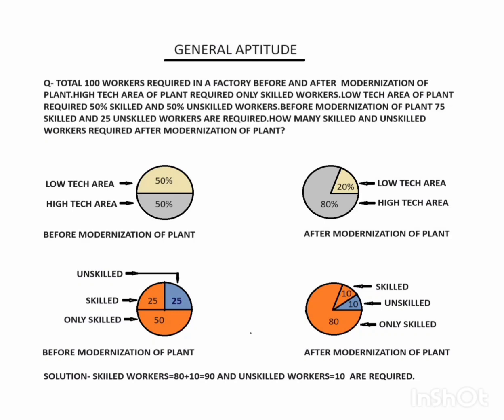General aptitude question: total 100 workers are required in a factory. Before and after modernization of the plant, the high-tech area requires only skilled workers, and the low-tech area requires 50% skilled and 50% unskilled workers. Before modernization, the plant requires 75 skilled and 25 unskilled workers. How many skilled and unskilled workers are required after modernization of the plant?